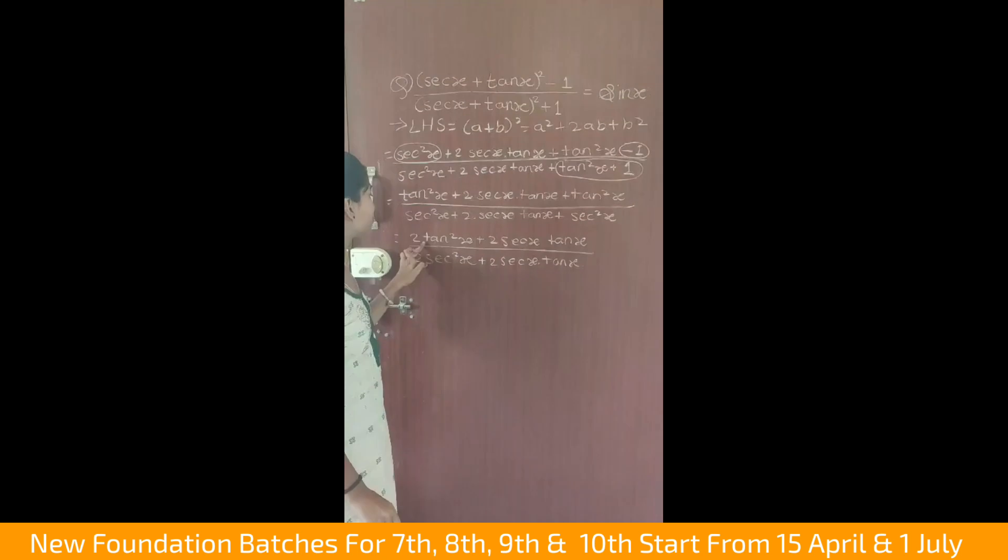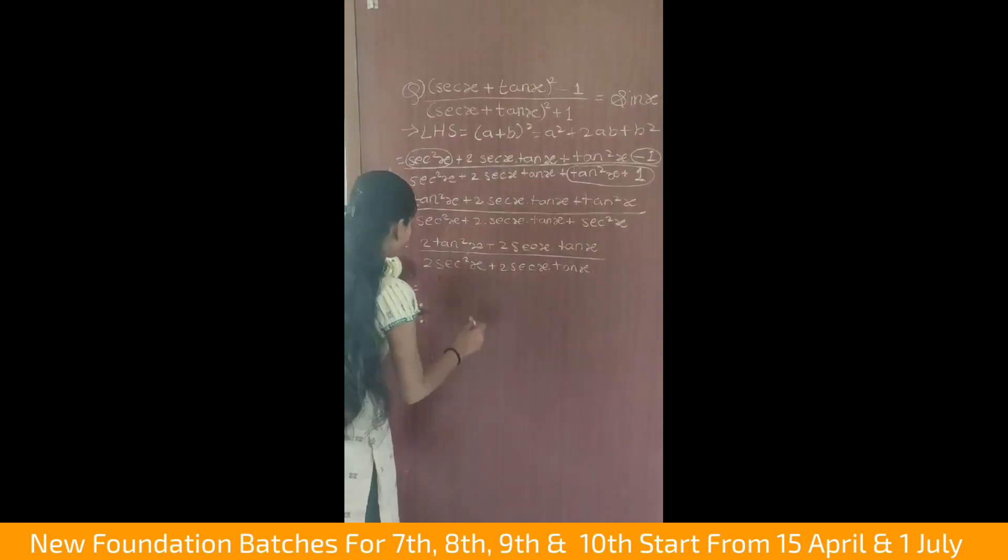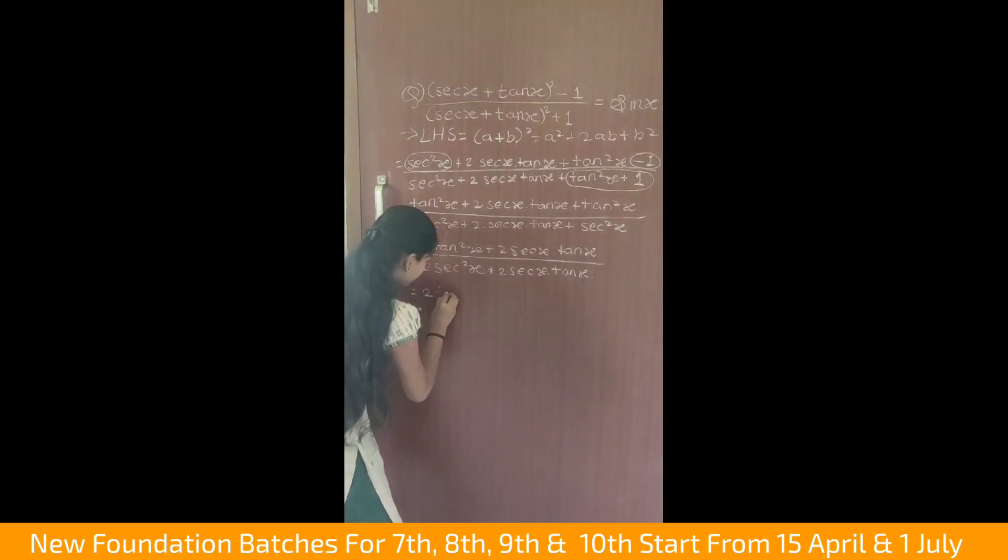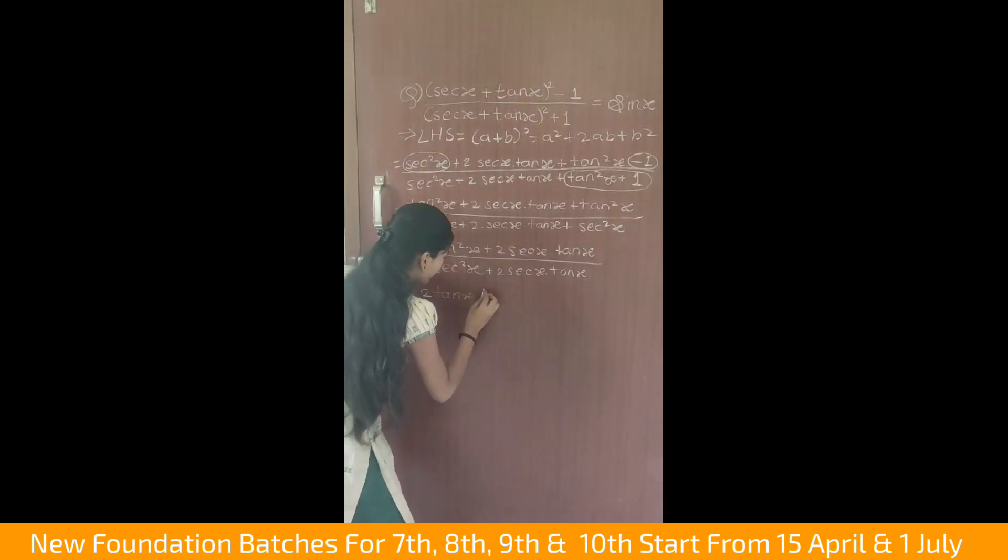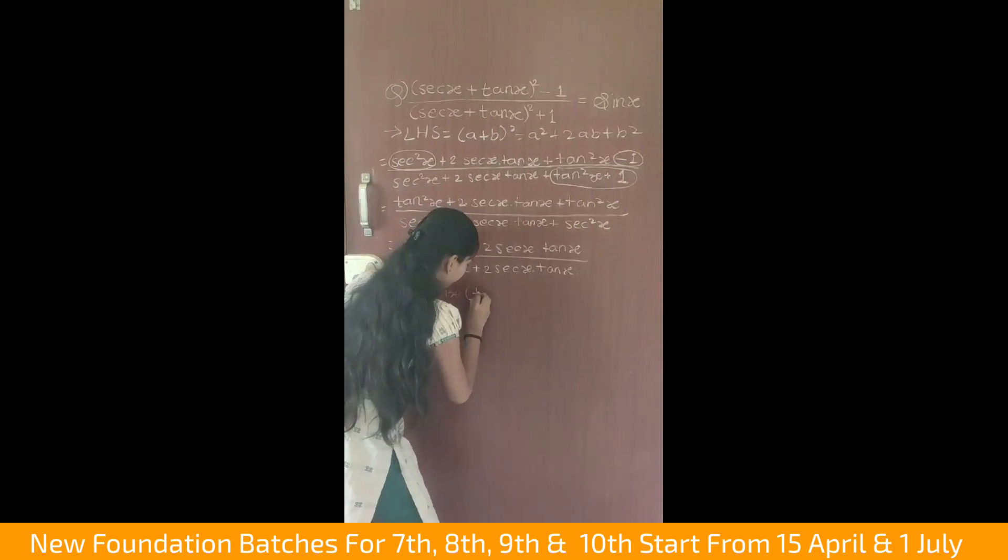Now here we will take 2 tan x common and in the denominator we will take 2 sec x forward.